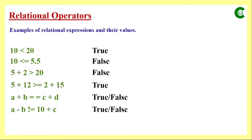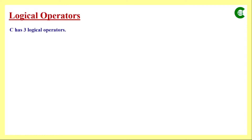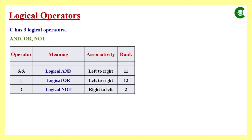That was about relational operators. Next, we will see the logical operators. C language supports three logical operators: AND, OR, and NOT, and they will be processed logically.